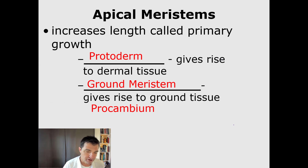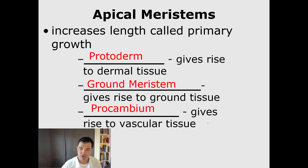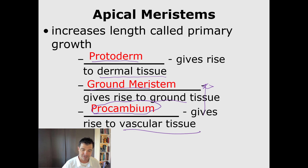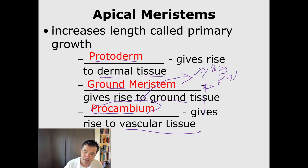Starting with apical meristematic tissue — this is the plant growing taller. There are three kinds of primary growth tissue. We have protoderm, the meristematic tissue that gives rise to dermal tissue. We have ground meristem, which gives rise to ground tissue. And we have procambium, which gives rise to vascular tissue. Whenever we see the word procambium, we're talking about a tissue that's going to help a plant grow xylem and phloem.